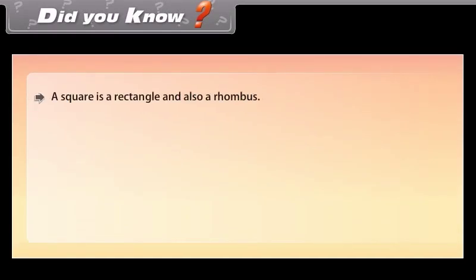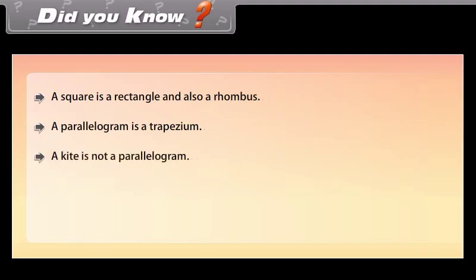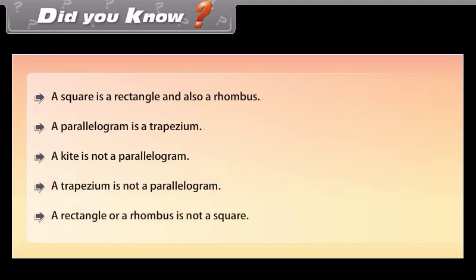Did you know: A square is both a rectangle and a rhombus. A parallelogram is a trapezium. A kite is not a parallelogram. A trapezium is not a parallelogram. A rectangle or a rhombus is not necessarily a square.